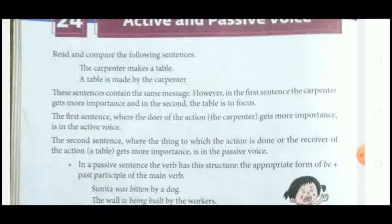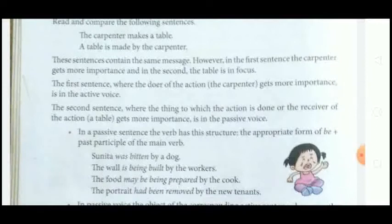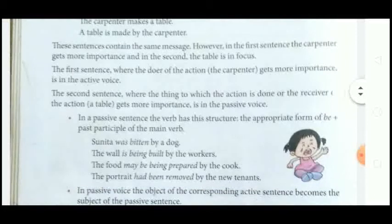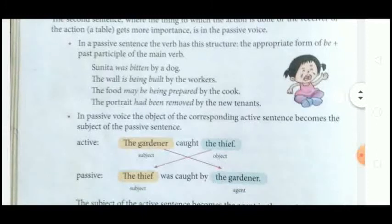In passive sentences, the verb has the structure: appropriate form of 'be' plus the past participle of the main verb. When we make a passive voice sentence, the structure will be: be-form (am, is, are, was, were, have, has, had) plus the past participle of the main verb. For example: 'Sumita was bitten by a dog' — here 'was' is the be-form and 'bitten' is the past participle.